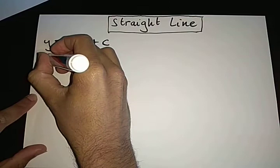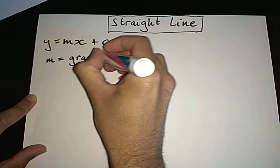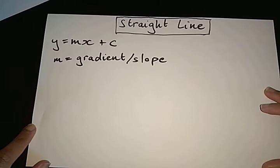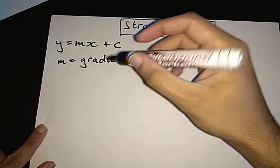The m parameter is known as the gradient. Remember, another word for gradient is the slope or the steepness of the graph. And this parameter is probably the most important on our straight line graph because it directly impacts the direction and the steepness.